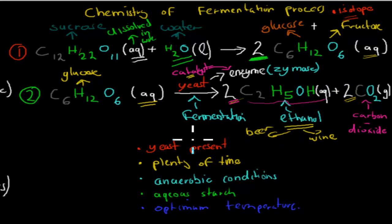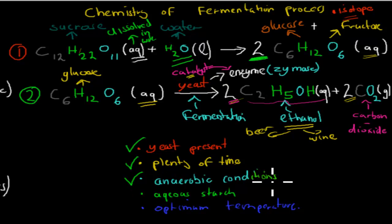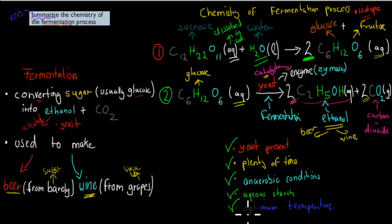This part was a summary of the last video — the ideal conditions for beer and wine making. First, we want yeast present because it produces the enzymes that act as catalysts and speed up the reaction. We want plenty of time. We want anaerobic conditions — anaerobic means no oxygen — because if oxygen is present we won't produce ethanol, we'll produce water instead. We want aqueous starch — dissolved in water. And we want the optimum temperature, about 37 degrees Celsius for most of these enzymes, because if it's too low or too high the enzymes become denatured and don't work, meaning glucose won't turn into ethanol fast enough.